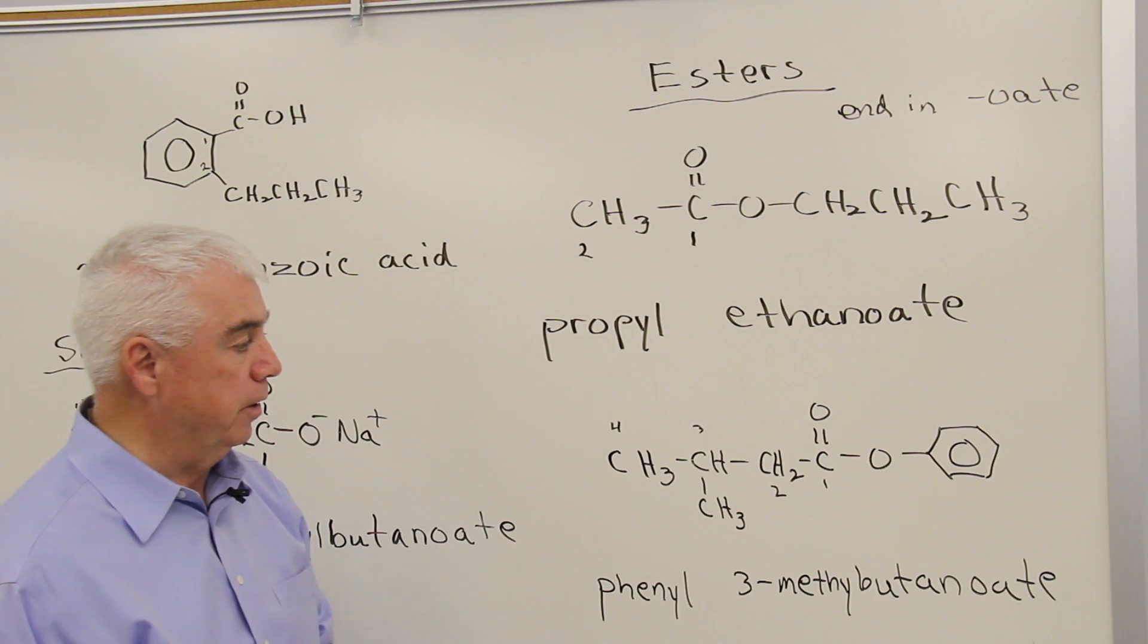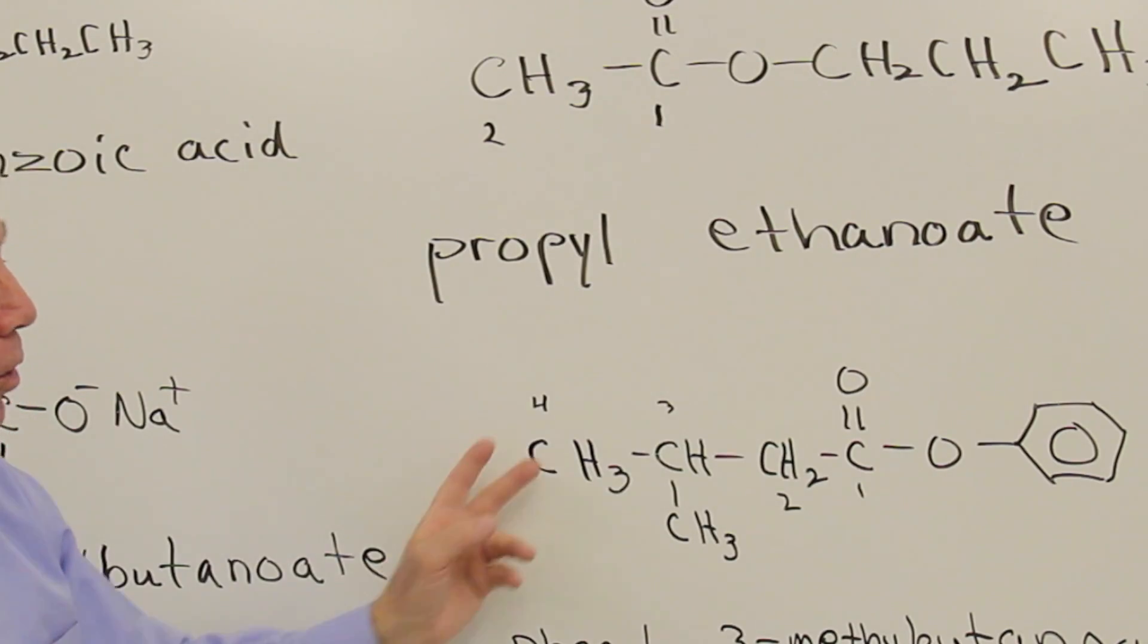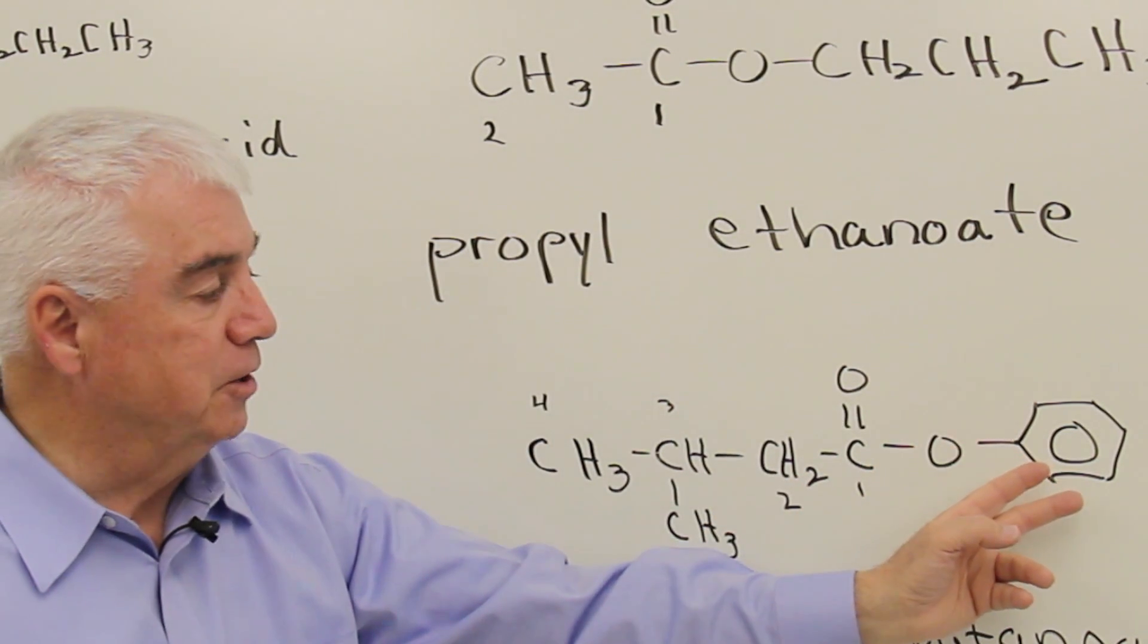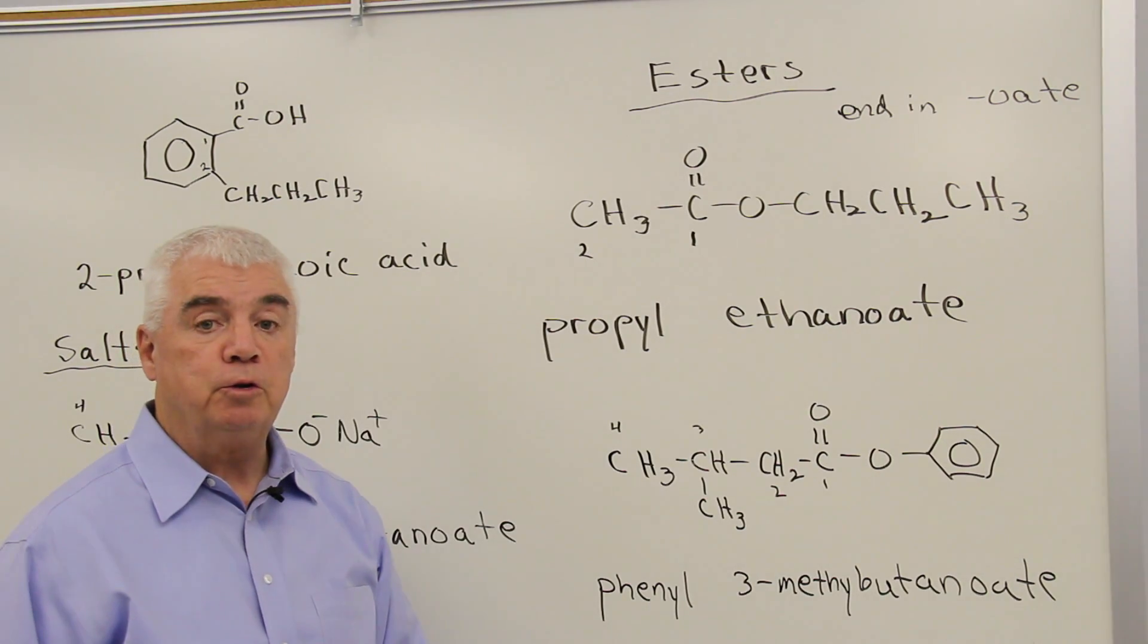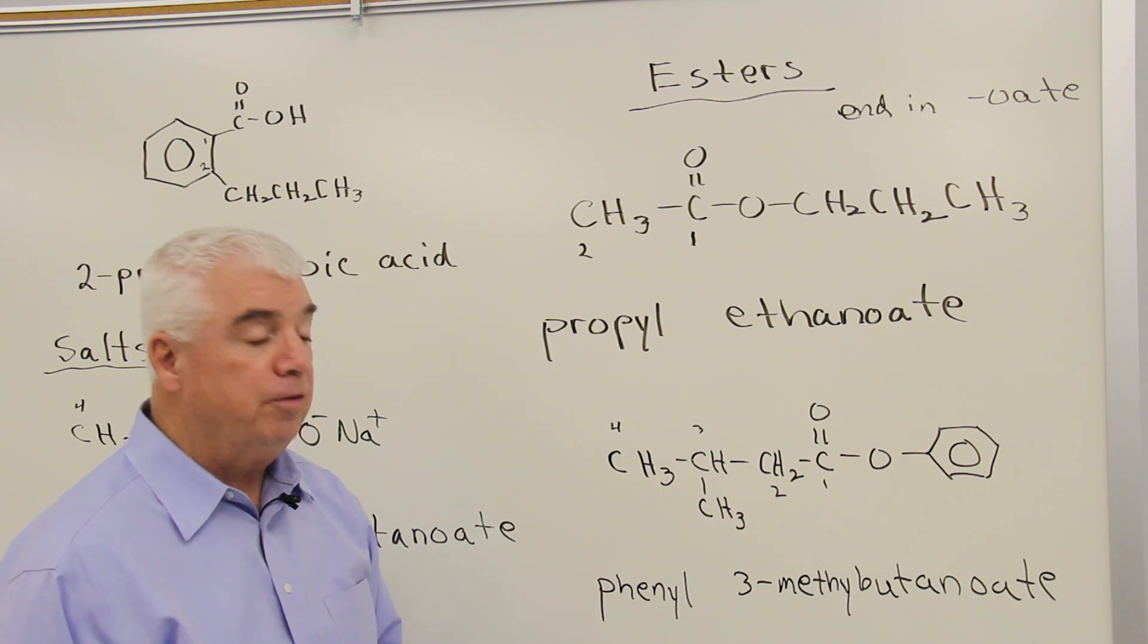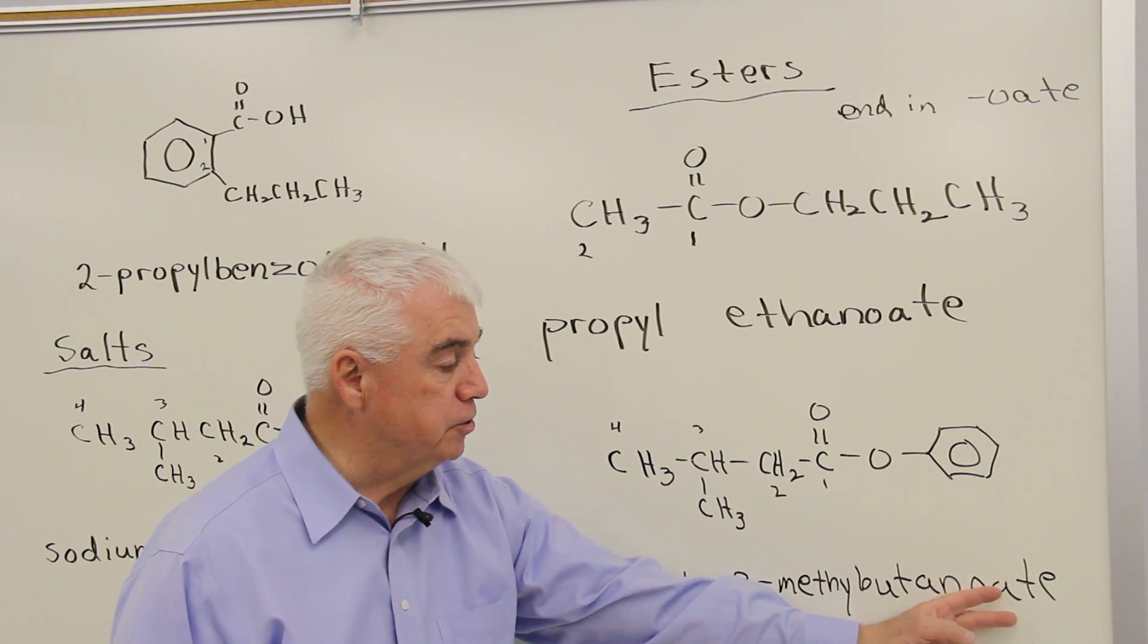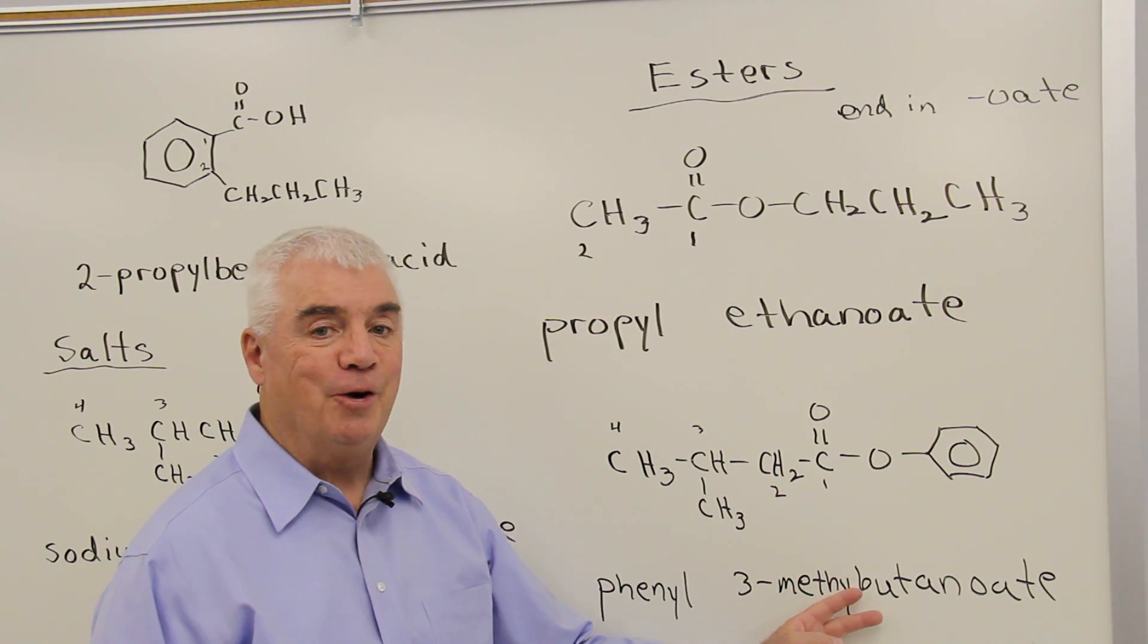Let's look at this structure. This is similar to the carboxylic acid we named a minute ago, but the group over here has changed. It's a benzene ring, and when benzene is used as a group, it becomes phenyl. So phenyl is the first word, then the name for the carboxylic acid, but the ending changes to oate: phenyl 3-methylbutanoate.